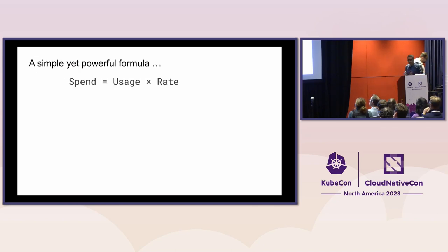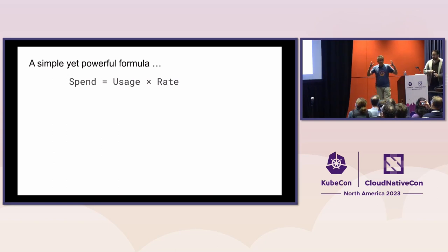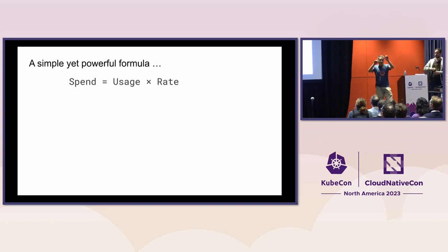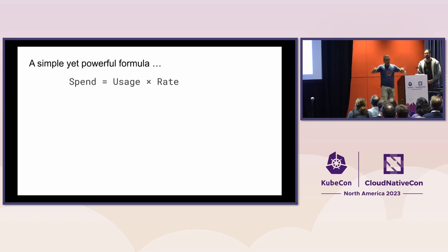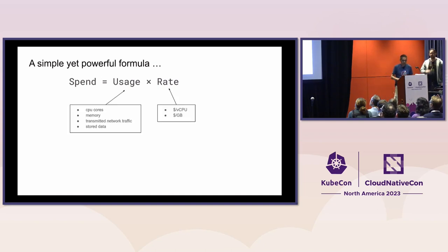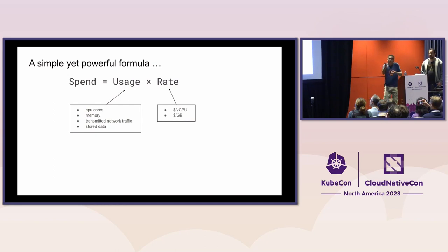To start digging into this, we need to understand the nature of our spending. This is a very simple formula: Spend equals the amount of money you pay for your resources in a particular period of time. Usage is the number of units of such resources, and Rate is how much you are being charged for each of those units. For usage, we're talking about things like the amount of CPU cores, amount of memory, traffic, and such. And for rate, it's dollars per each unit of these resources from the cloud providers.